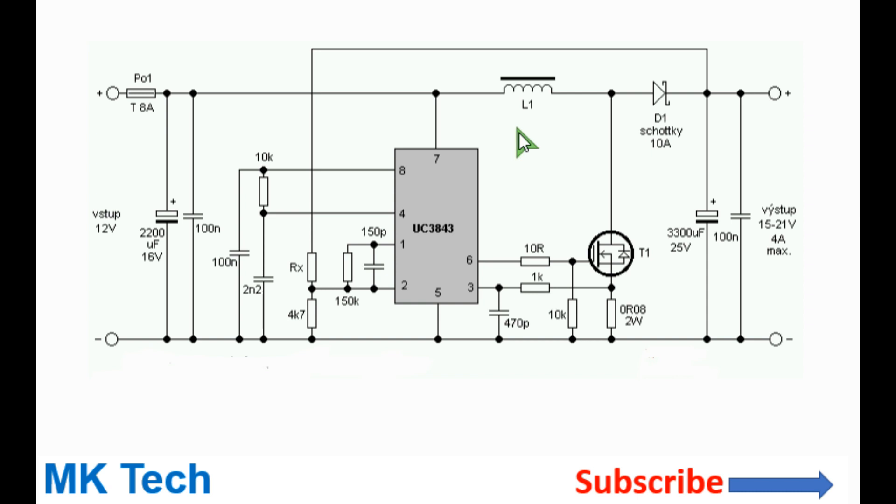This process repeats many thousand times per second. The output voltage should be dependent on the duty cycle. For that, we have this feedback section made of Rx and this 4.7 kilohms resistor. The value of Rx and this other feedback resistor establishes the reference voltage at pin 2 here.